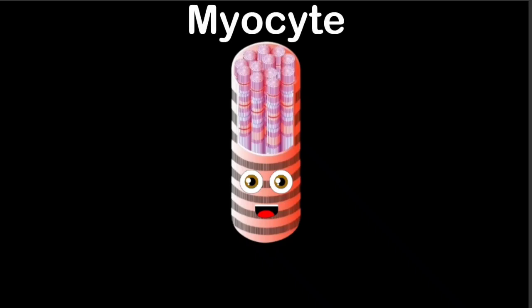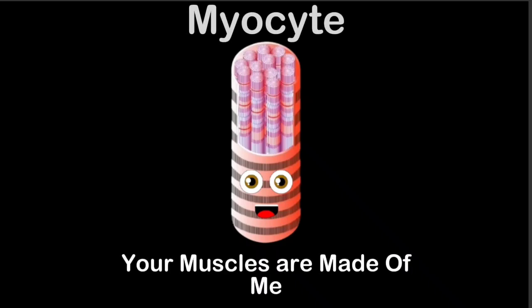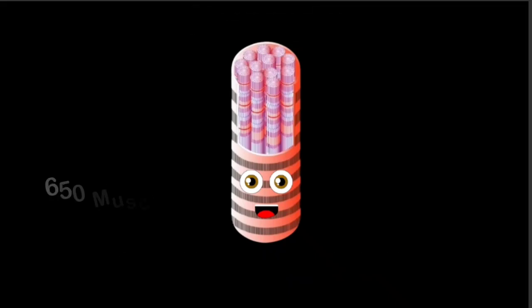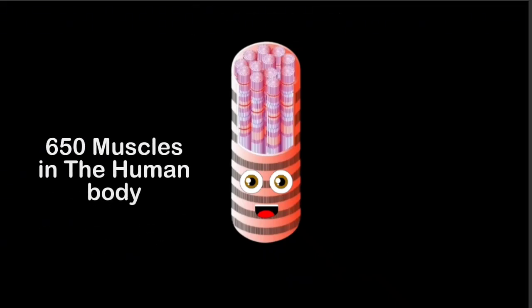I am a myocyte. Your muscles are made up of me. Here's some of the 650 muscles in the human body.